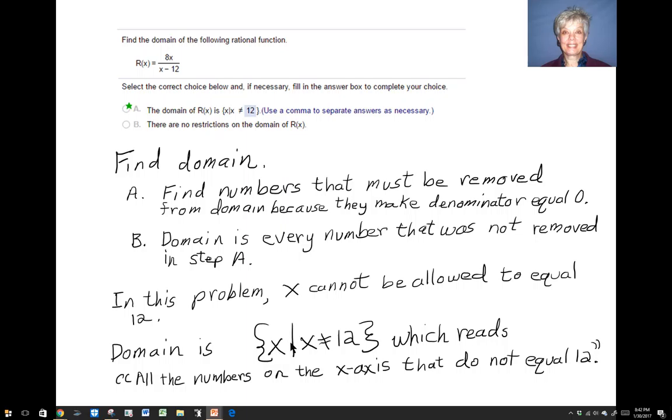This vertical bar means such that, and here we have x does not equal 12. So what this is saying is, the domain is going to be the set of all the numbers on the x-axis that don't equal 12. Or another way you could say it would be the set of all the numbers on the x-axis except 12.